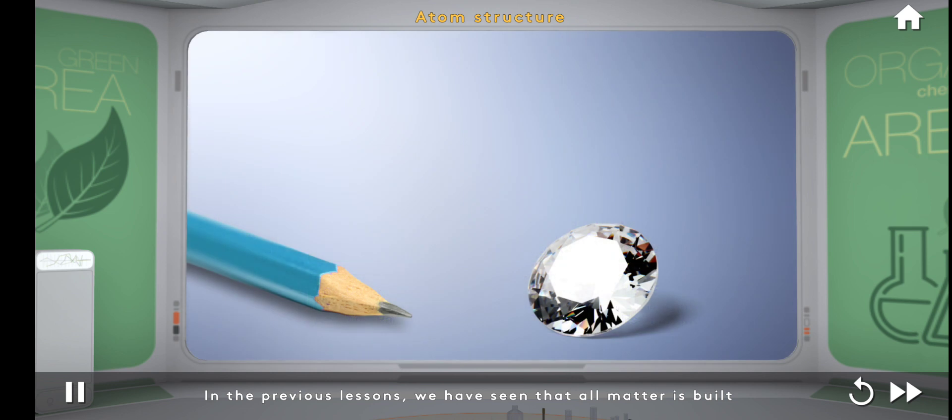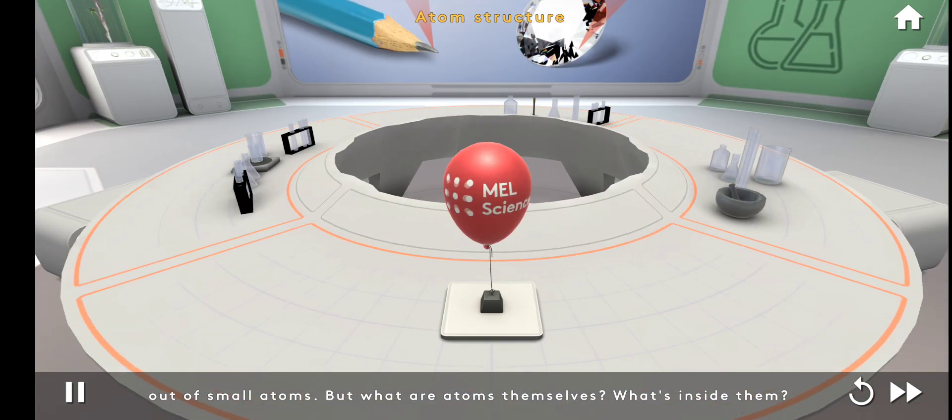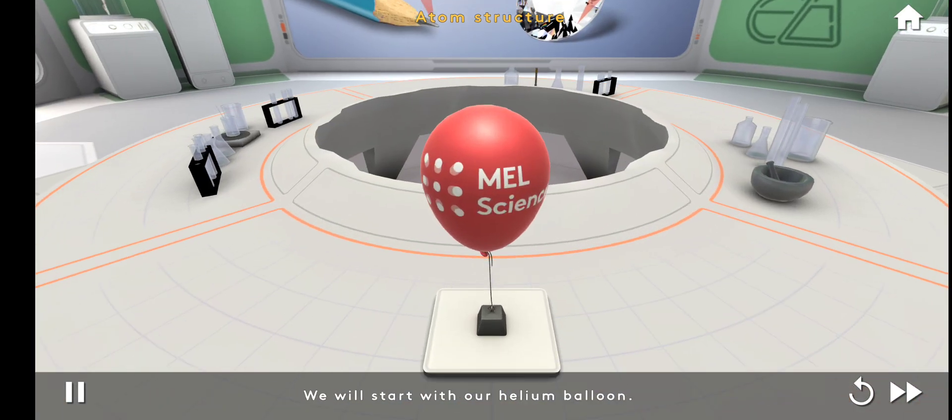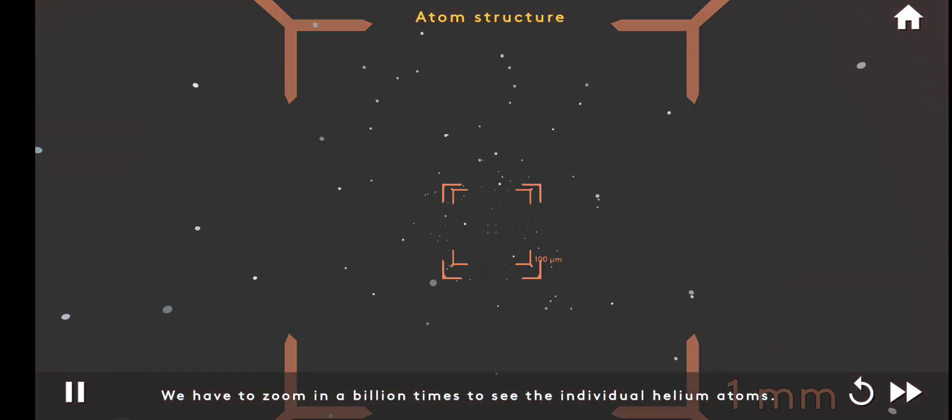In the previous lessons, we have seen that all matter is built out of small atoms. But what are atoms themselves? What's inside them? We will start with our helium balloon. Let's look inside. Ready to dive? We have to zoom in a billion times to see the individual helium atoms.